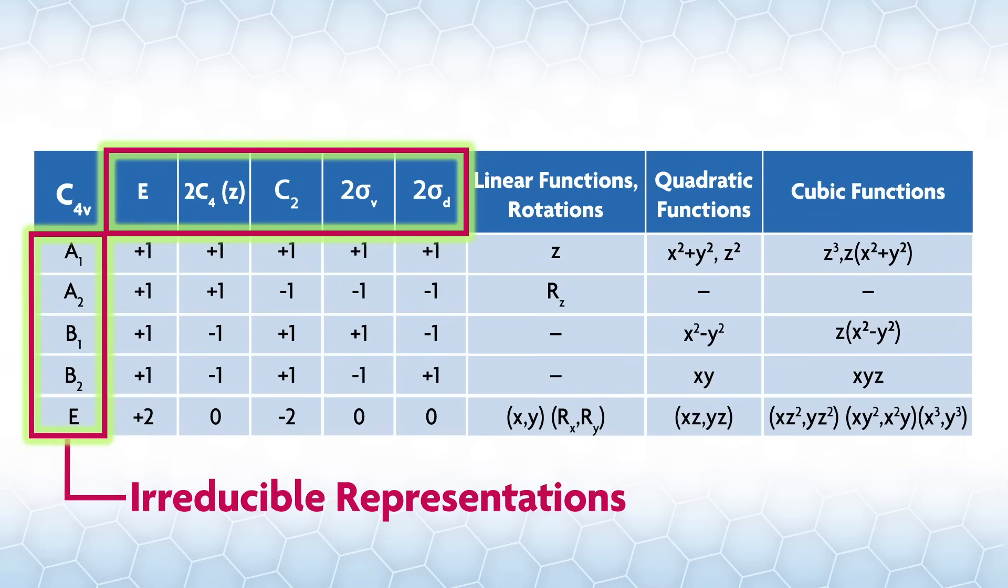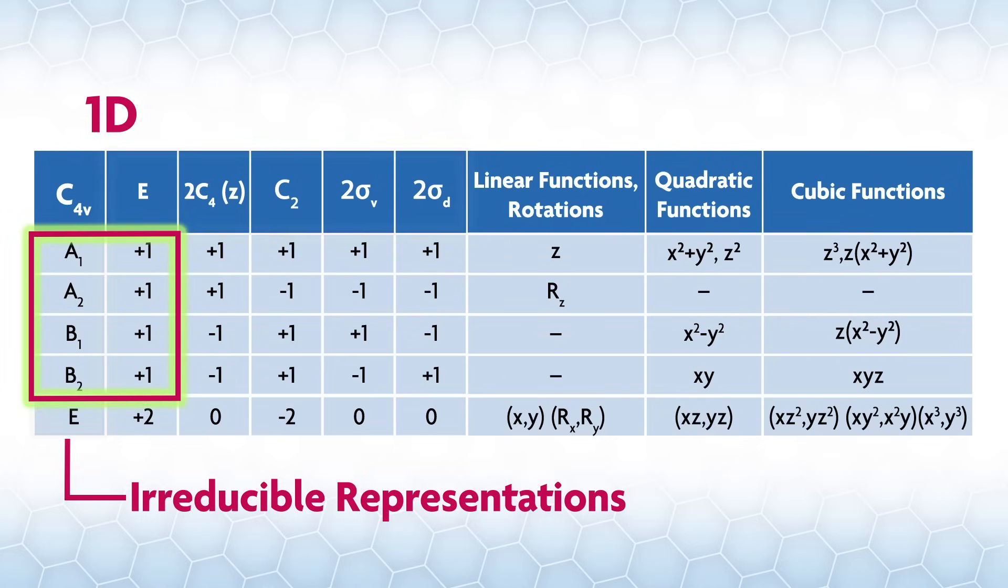Irreducible reps can have different numbers of dimensions, things they represent. For three-dimensional objects, the irreducible reps will generally be 1, 2, or 3D. How many dimensions the irreducible rep is can be found under identity. So in C4v, A1, A2, B1, and B2 are all one-dimensional. The E irreducible rep at the bottom left in the character table is two-dimensional.